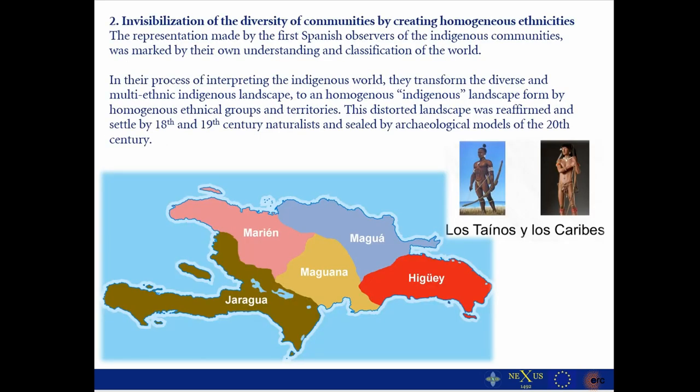The second point is the invisibilization of diversity of communities by creating homogenous ethnicities. The representation made by the first Spanish observers was marked by their own understanding and classification of the world. In their process of interpreting the indigenous world, they transformed the diverse and multi-ethnic indigenous landscape into a homogenous indigenous landscape formed by a homogenous ethnic group and homogenous territories. This distorted landscape was reaffirmed and settled by 18th century naturalists and sealed later on by archaeological models in the 20th century.